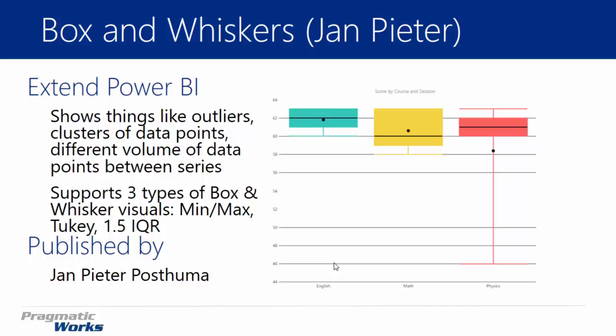In the example we see here with different types of classes — English, math, physics — physics for example has a lower extreme or a min of 46. You can assume these are points or number of answers correct on a test. So we've got a min of 46, that's the lower extreme, and the upper extreme is 63 — the maximum value. If we wanted to get the range of values, we take the difference between the upper and lower extreme and see that the range is 17. We're able to get some statistical information pretty quickly.